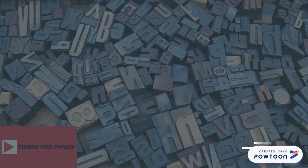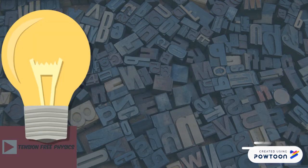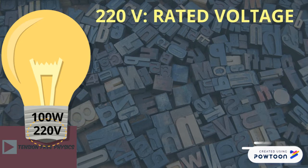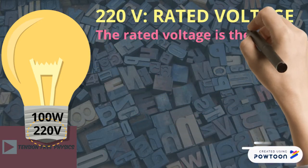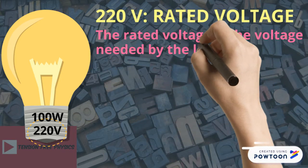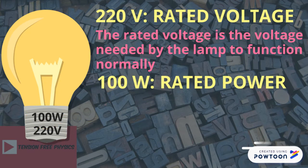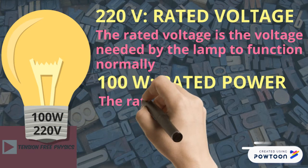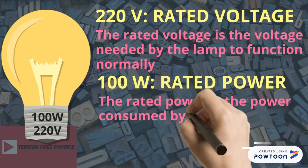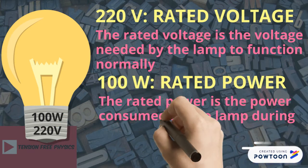Electric appliances generally carry two inscriptions. On this lamp you read 100 watt, 220 volts. The 220 volt is the rated voltage of the lamp, where the rated voltage is the voltage needed by the lamp to function normally. The 100 watt represents the rated power of the lamp, where the rated power is the power consumed by the lamp during normal functioning.